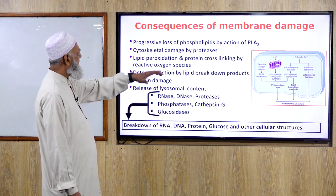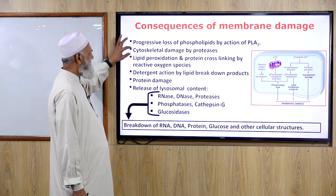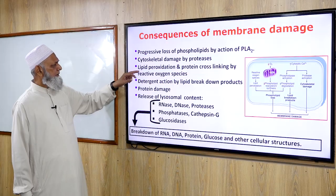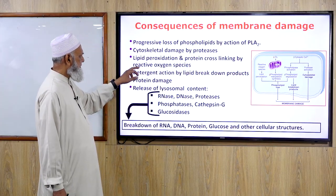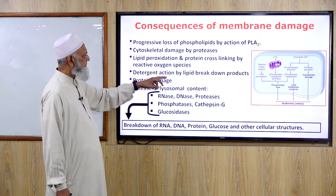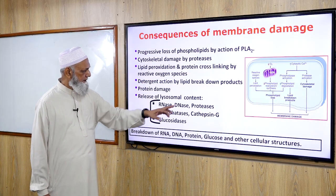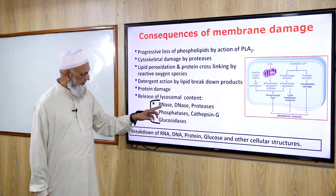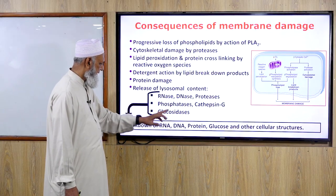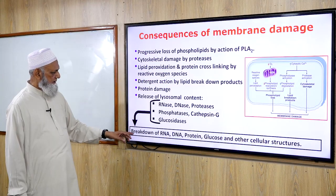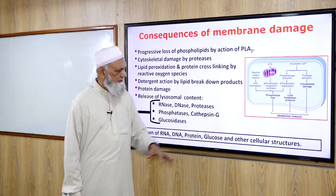Consequences of membrane damage: progressive loss of phospholipids by proteases, lipid peroxidation and protein cross-linking by reactive oxygen species, detergent reaction by lipid breakdown products, protein damage, and release of lysosomal contents — RNAs, DNAs, proteases, phosphatases, cathepsin G, glucosidase — causing breakdown of RNA, DNA, protein, glucose, and other cellular structures.